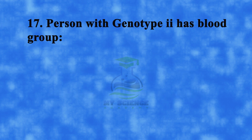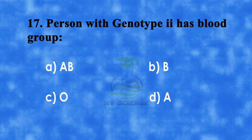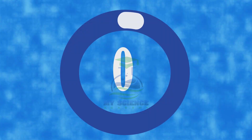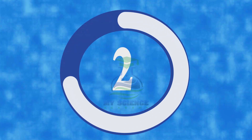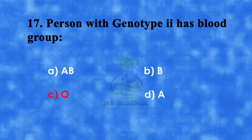Question 17: A person with genotype small i, small i has blood group — A. AB, B. A, C. O, or D. B. Correct answer is C. O.